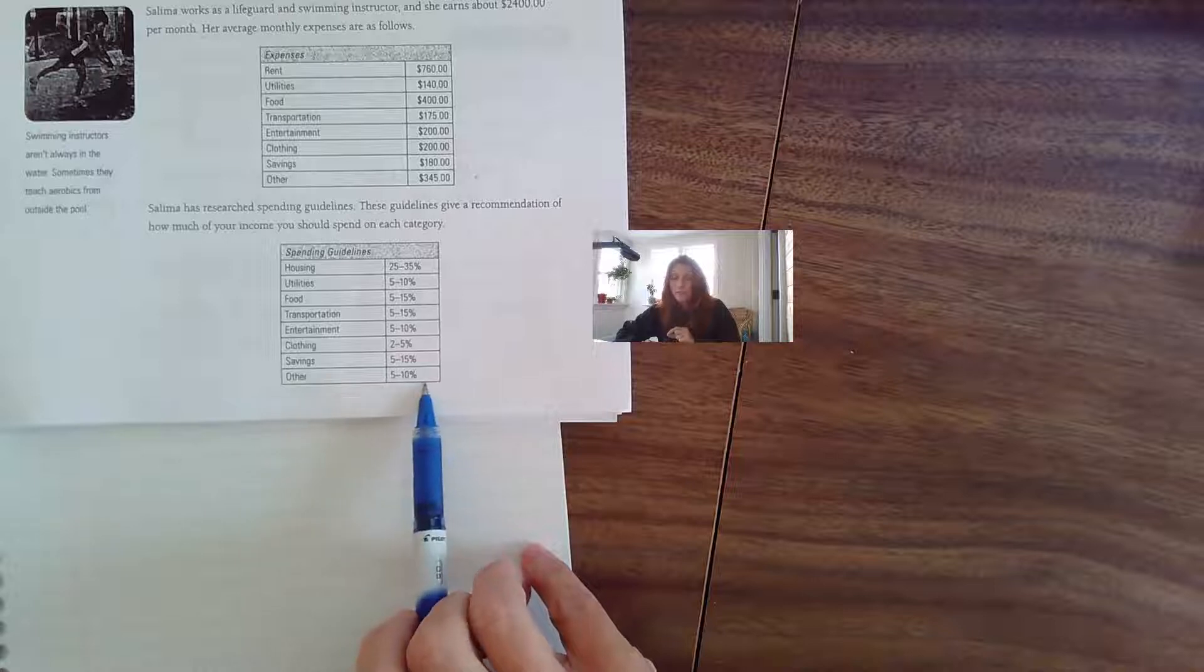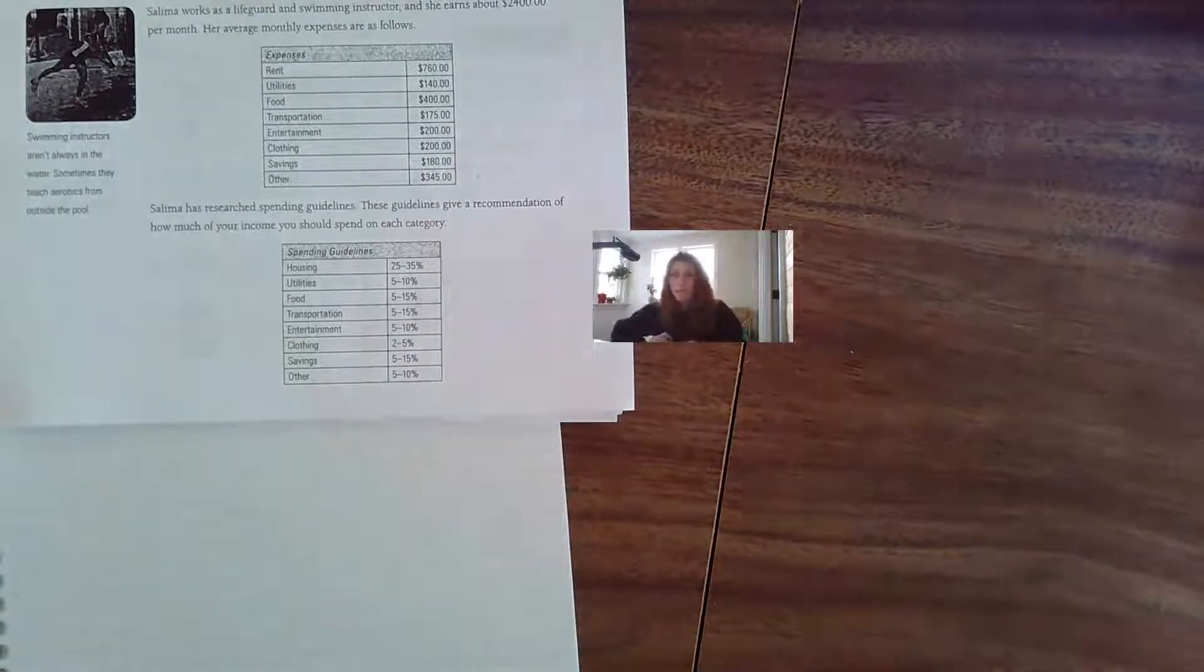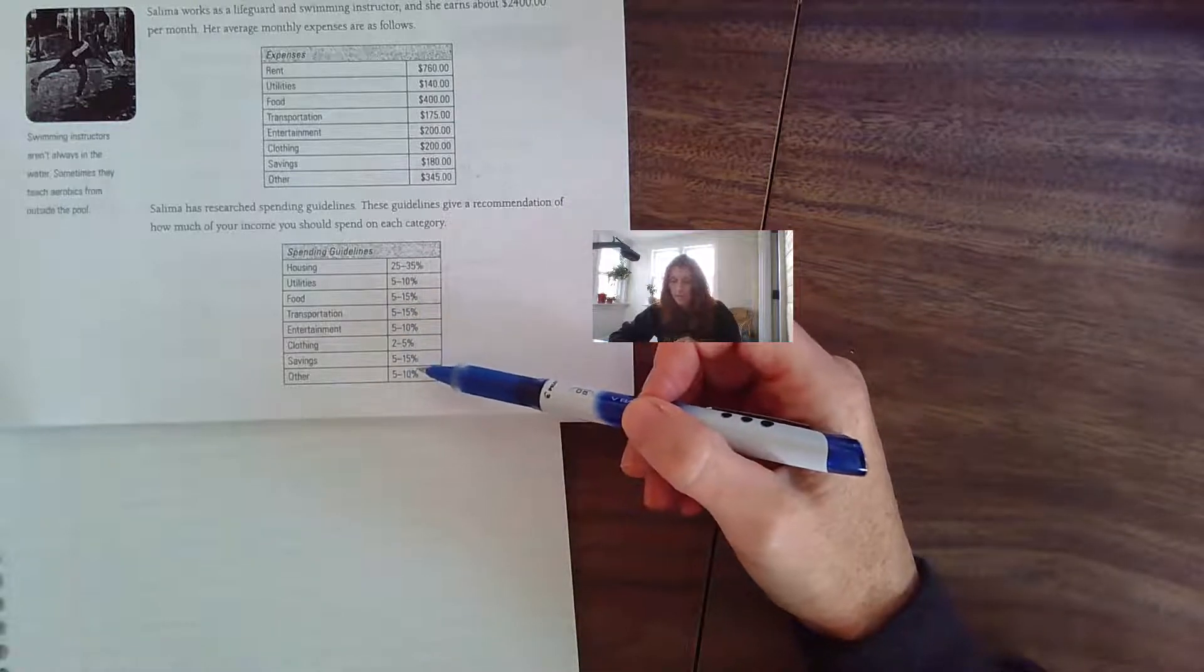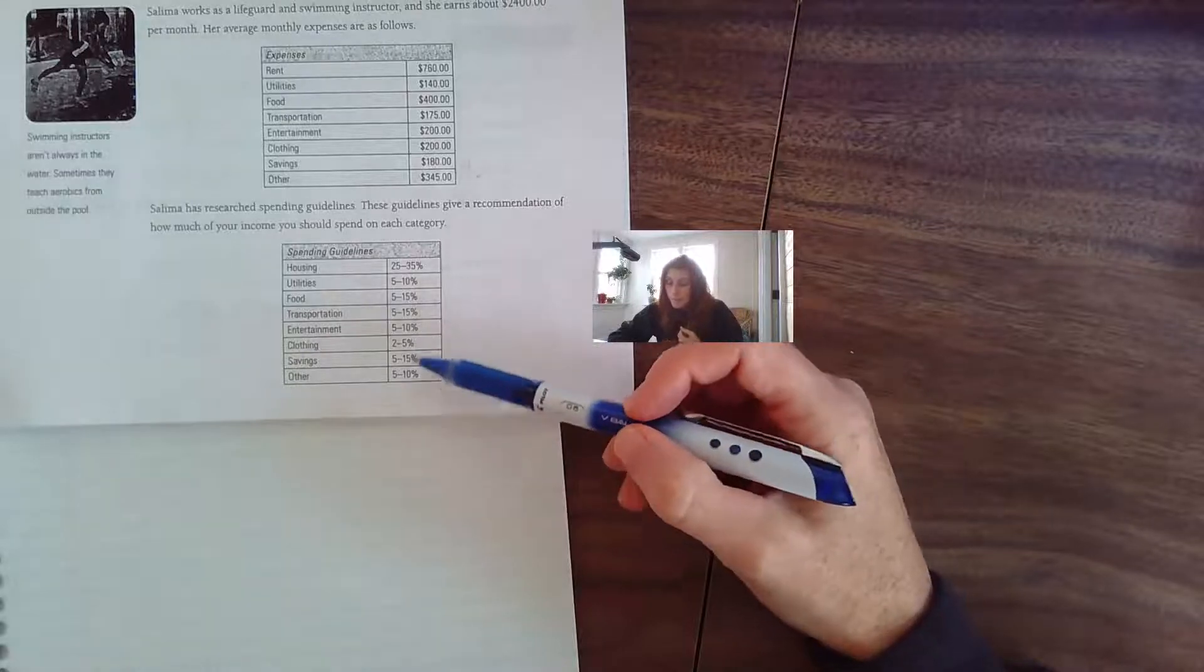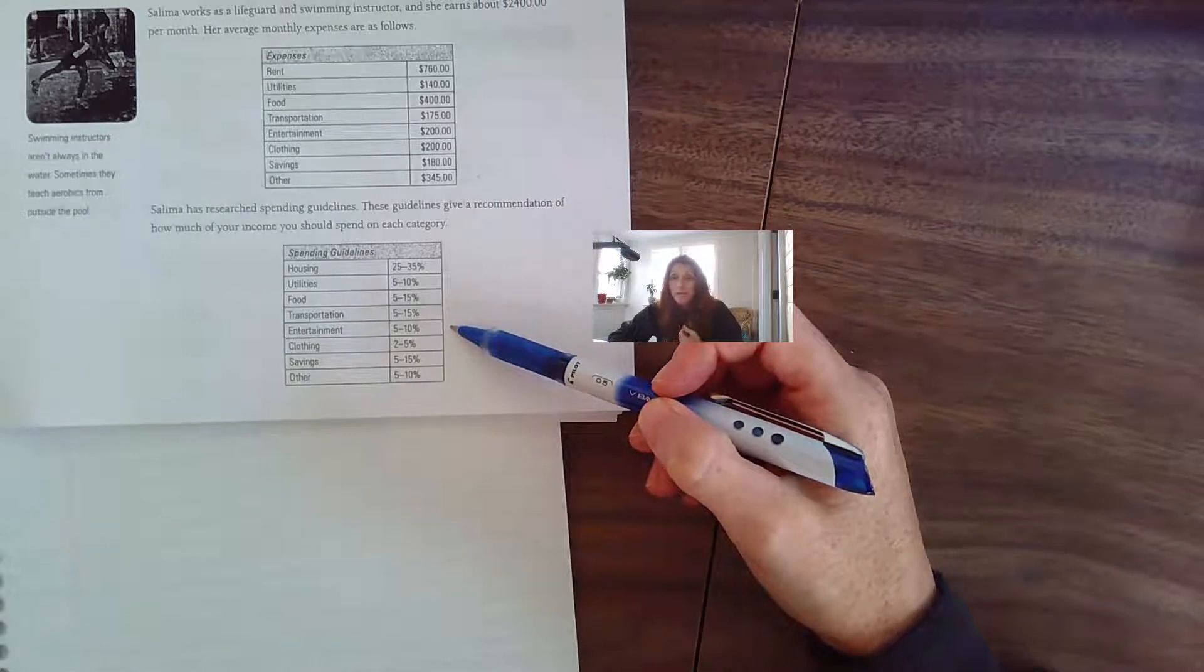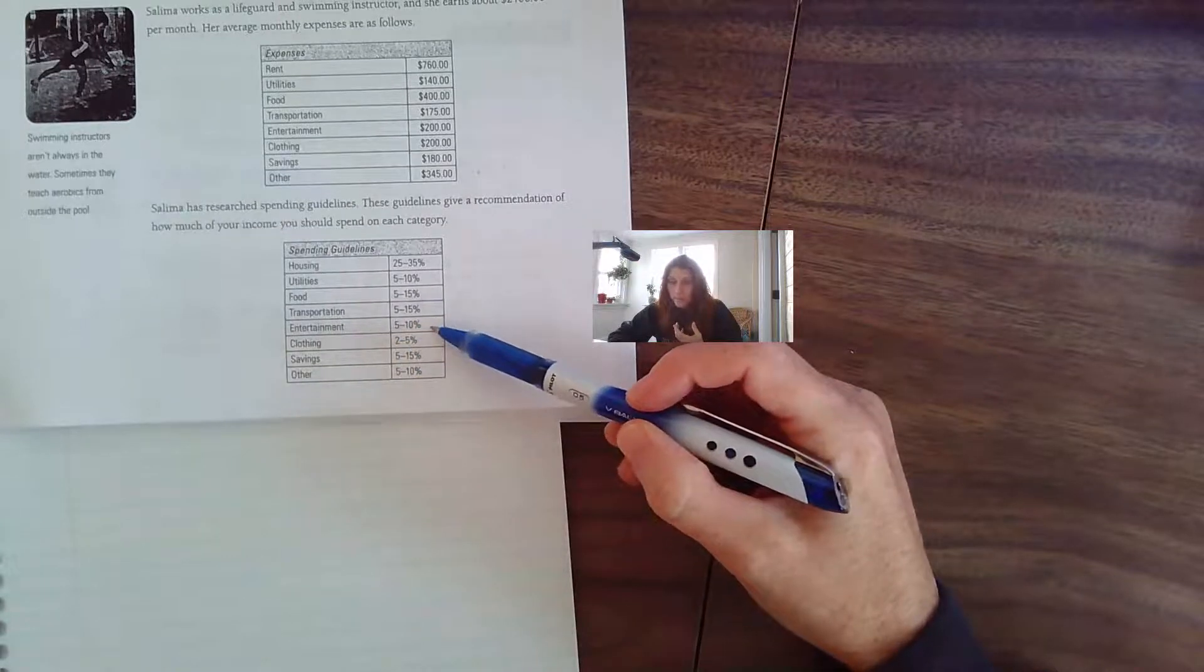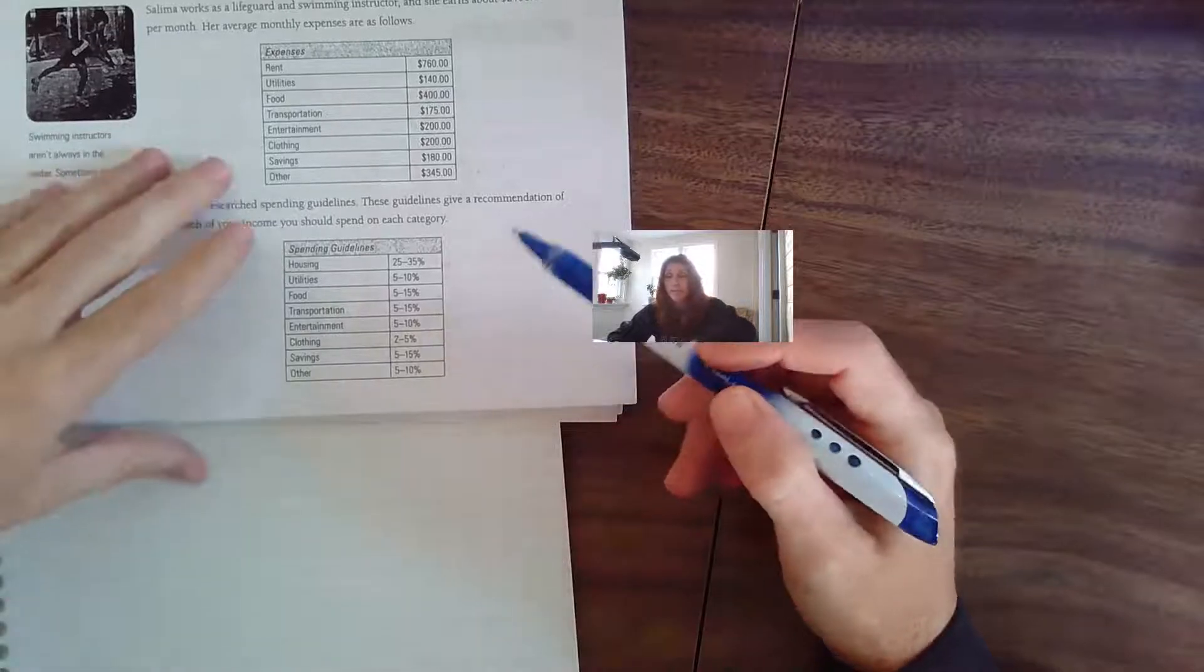Clothing should be 2 to 5%, savings 5 to 15%, and other 5 to 10%. These are recommendations. When you are doing a budget, you want to look at what you're spending your money on and say, hey, I realized in a four-month span, 50% of my expenses were on entertainment—I'm really overshooting the guidelines of 5 to 10%.